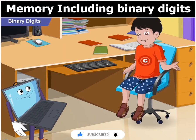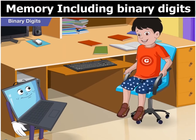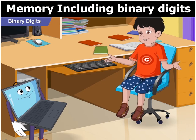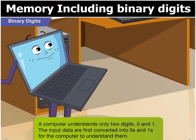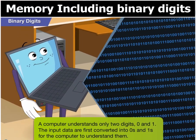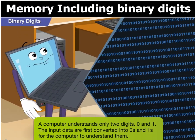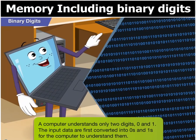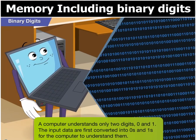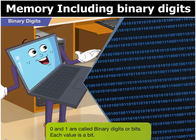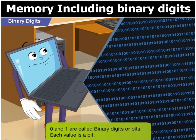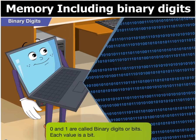Toggle, our teacher told us that although it has a great memory, a computer is only able to understand two digits. Is it true? Yes, Goggle, a computer understands only two digits — zero and one. The input data are first converted into zeros and ones for the computer to understand them. Zero and one are called binary digits or bits. Each value is a bit.